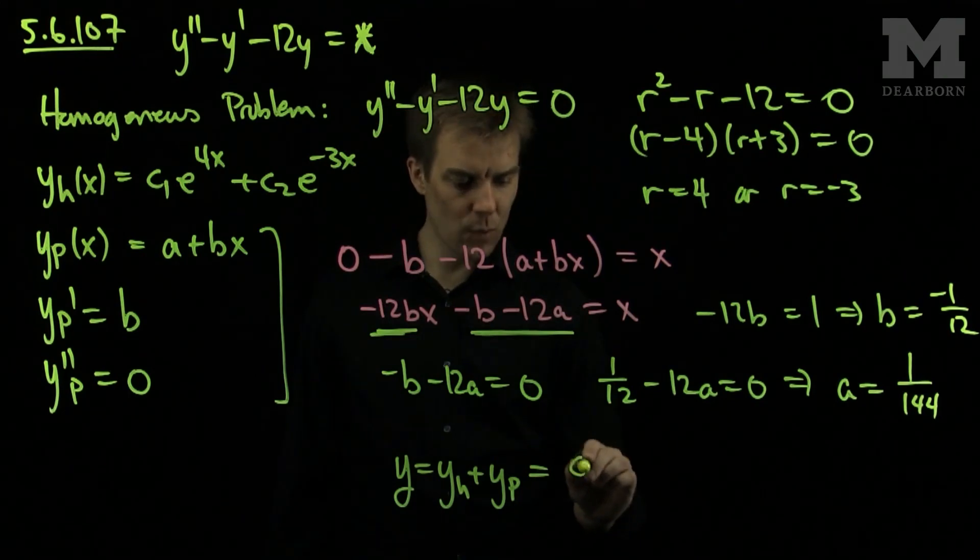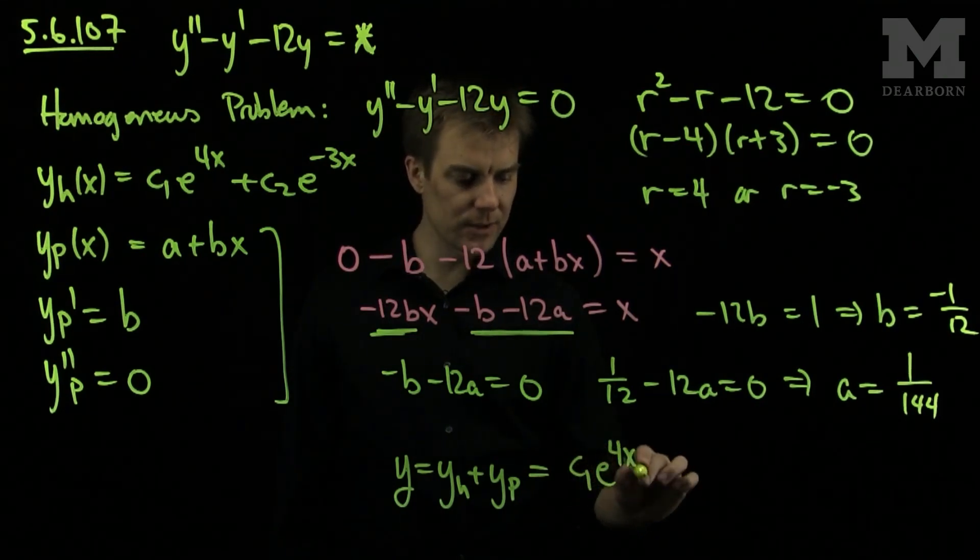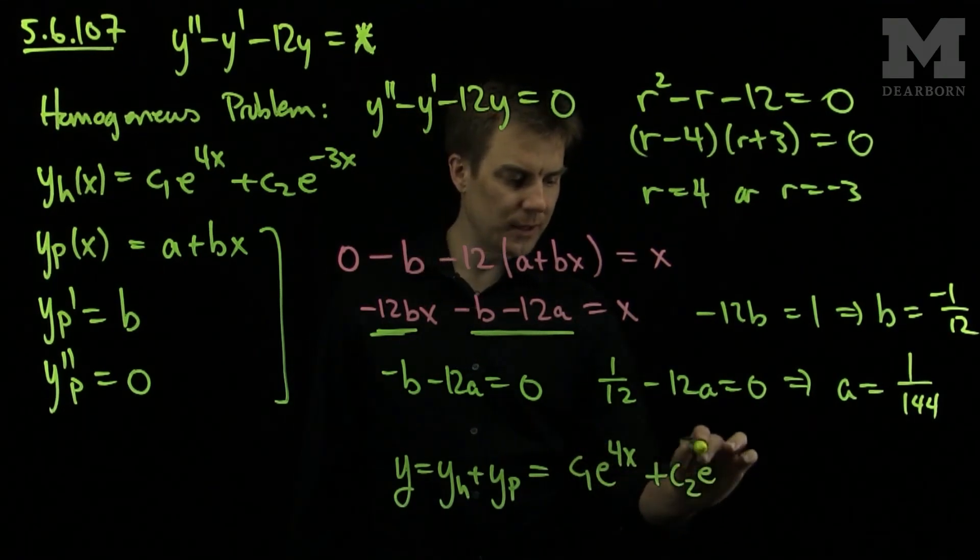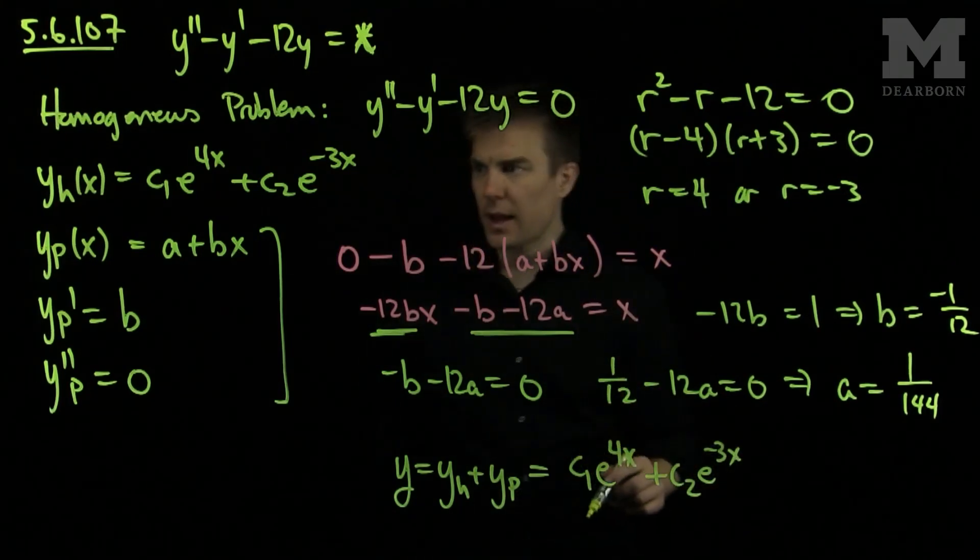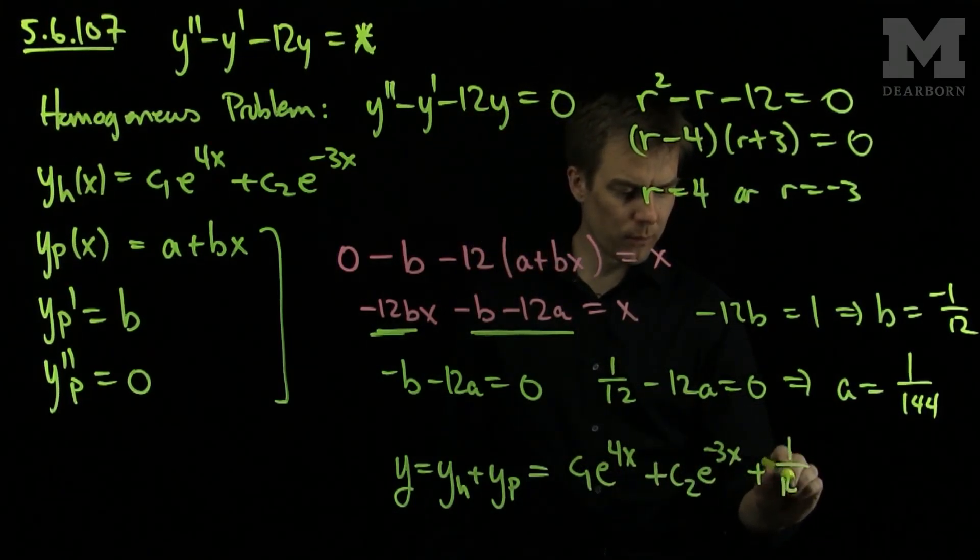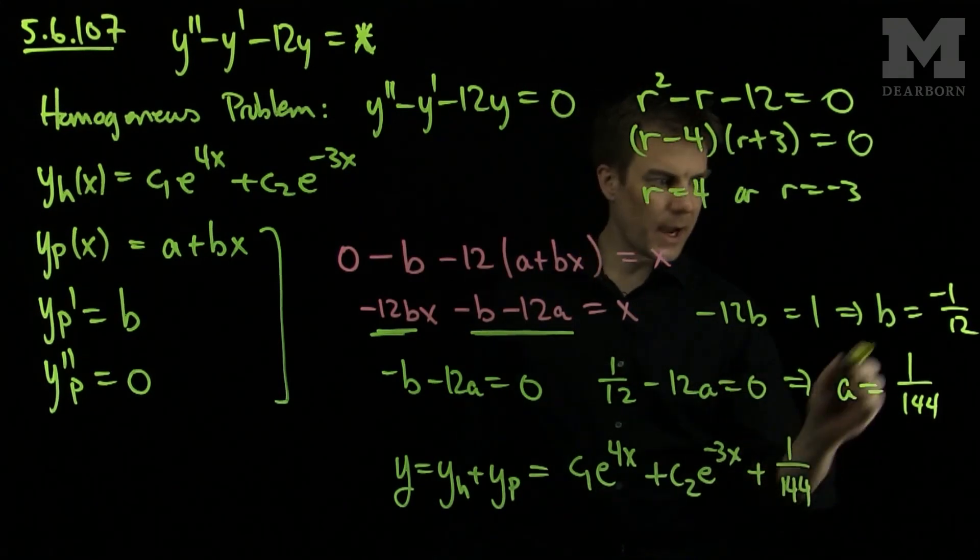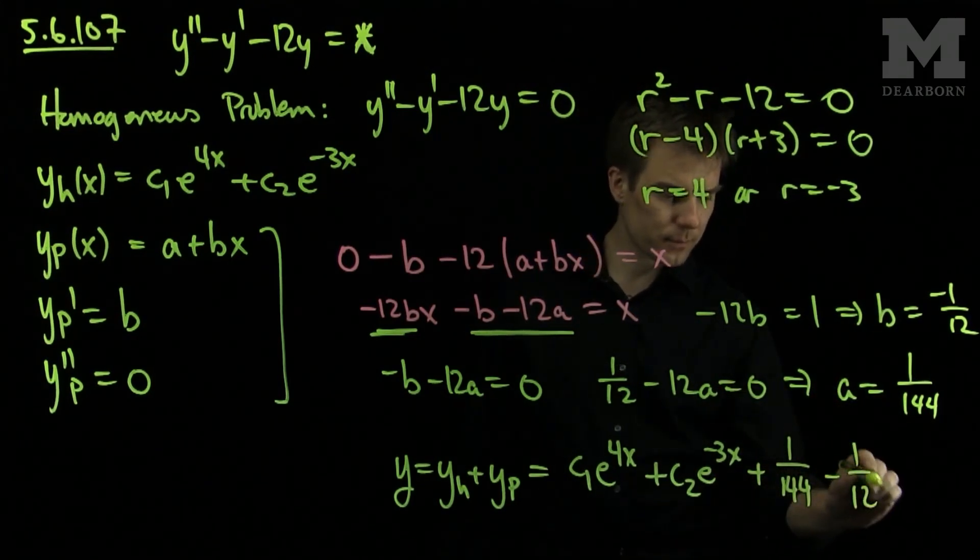y homogeneous we know to be c1e to the 4x plus c2e to the negative 3x. And the particular solution is plus 1 over 144 minus 1 twelfth x.